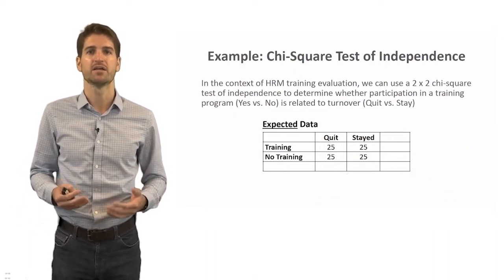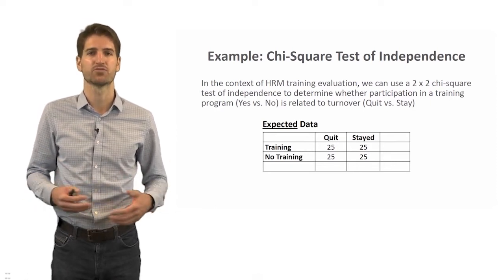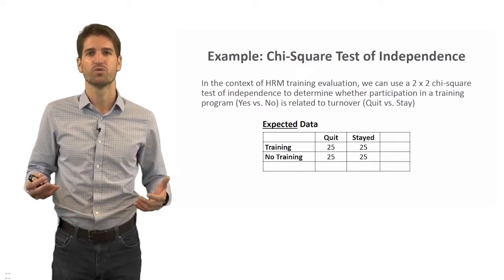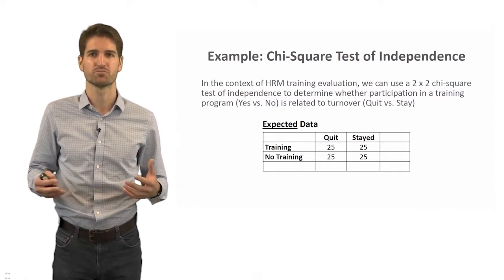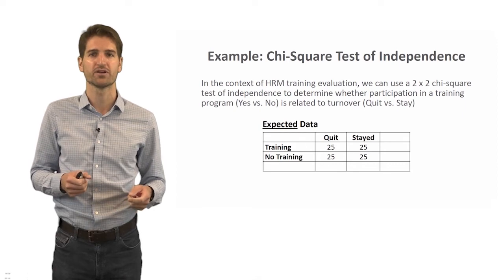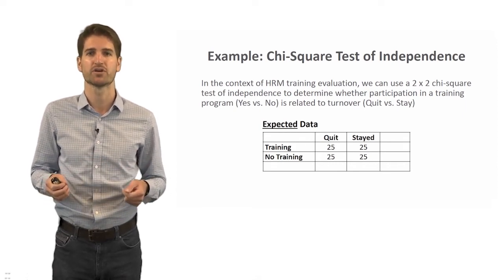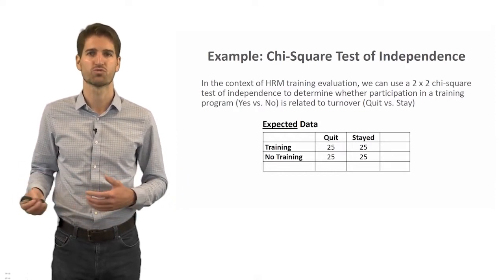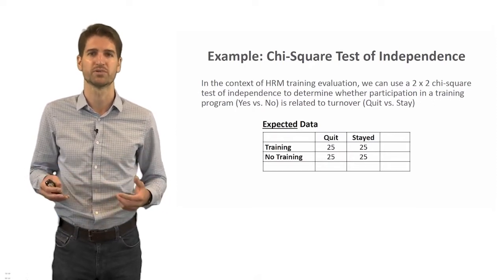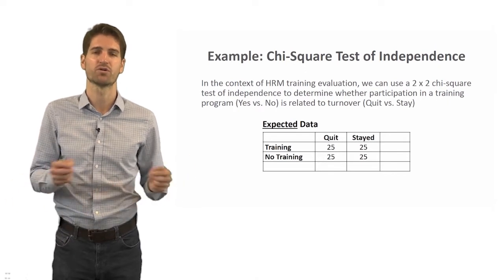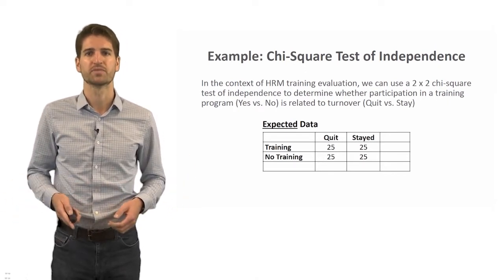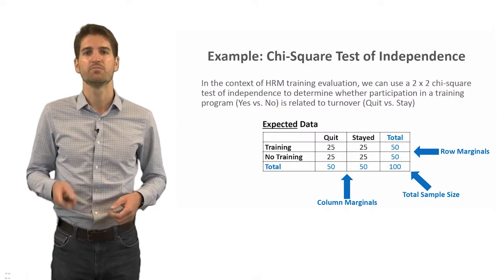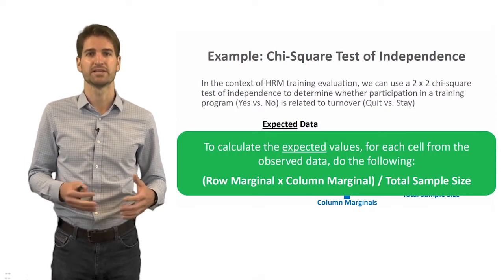We also need to calculate what's referred to as the expected data — what we would assume by chance would be most likely if there's no association between these two variables. If these two categorical variables are truly independent of each other, what would we expect? Here, we'd expect 25 people in each cell — an equal probability of quitting or staying regardless of training. We can also calculate row marginals for the expected data in the same way as for observed data.